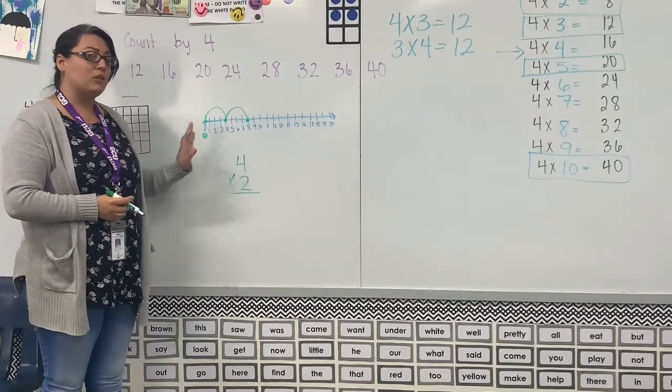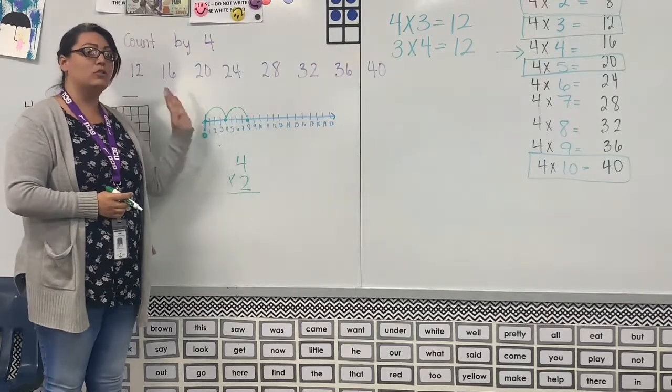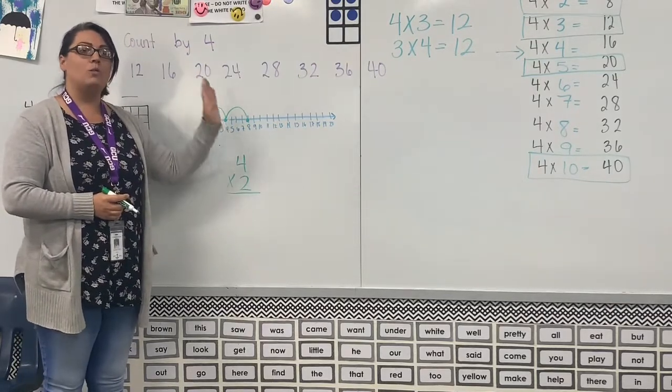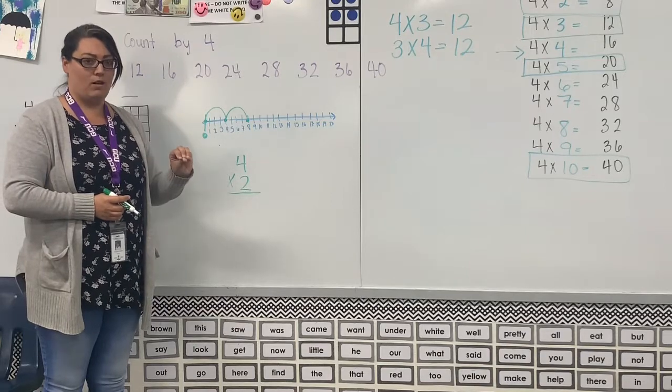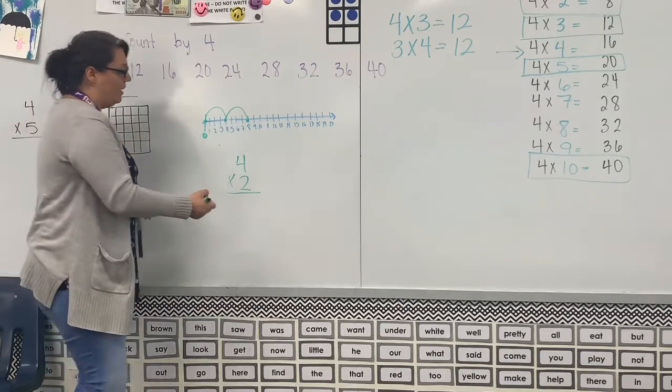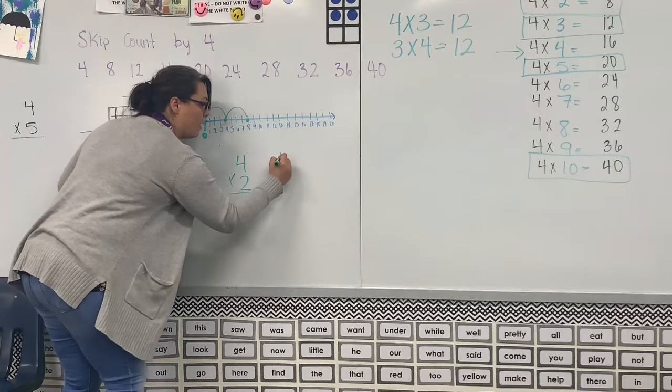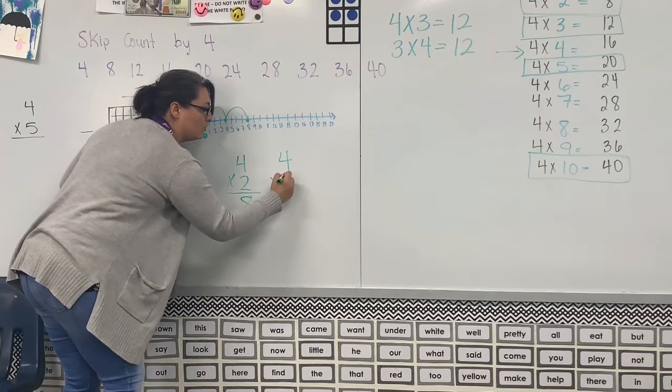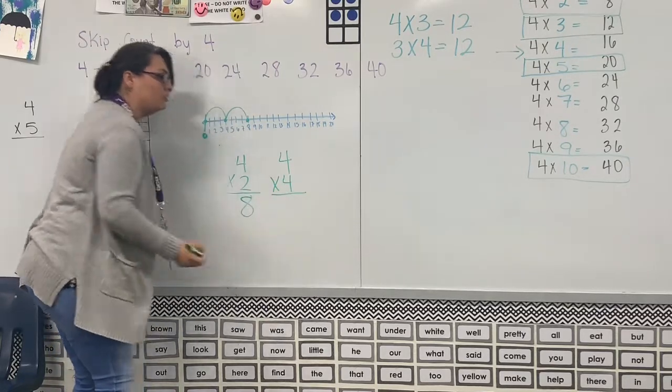And I land on eight. So remember when you're looking at your number line, don't start on the number four. You always start on the number zero. So let's say I give you the problem 4 × 4 and you're using your number line.